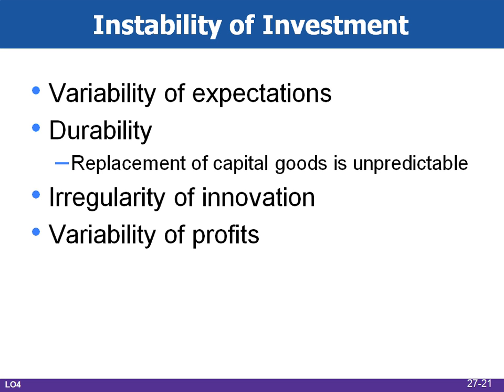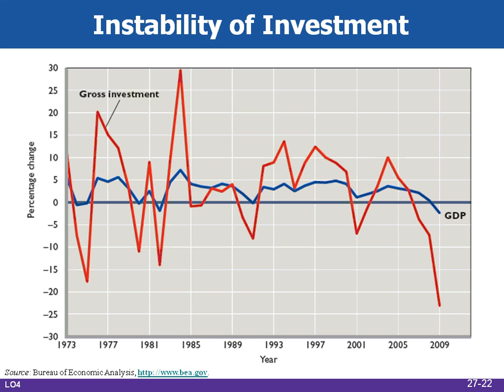Investment is a very unstable type of spending — gross investment, IG, is more volatile than GDP. Business expectations are easily and quickly changed. Capital goods are durable, so spending can be postponed, and firms can choose to repair older equipment rather than replace it, which is unpredictable. Innovation occurs irregularly; new products stimulate investment in waves that in time recede. Profits affect both the incentive and ability to invest and vary considerably from year to year, contributing to the instability of investment spending. Annual percentage changes in investment spending are often several times greater than percentage changes in GDP.